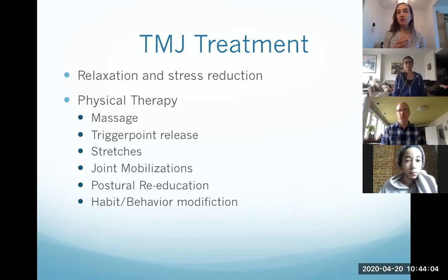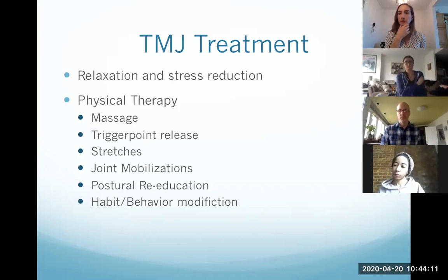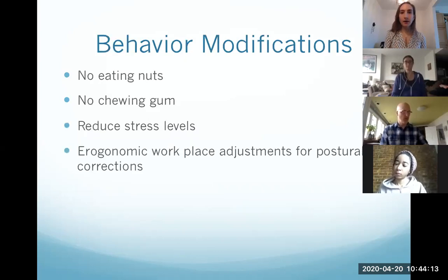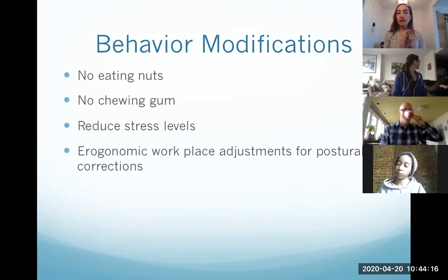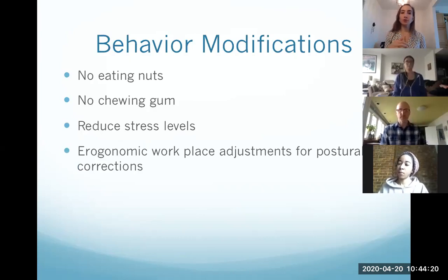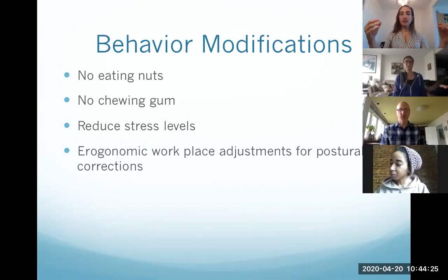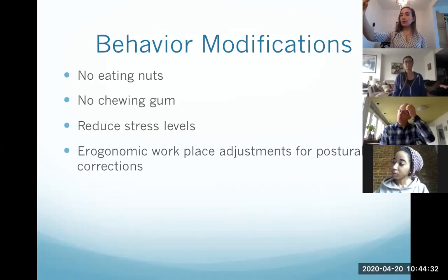Habit and behavior modification: as mentioned, difficulty eating and chewing leads to the recommendation of not eating nuts or other hard foods, no chewing gum, reducing stress, and addressing postural ergonomics — like proper sitting posture and making sure your computer screen is at eye level. All of these adjustments need to be made to allow for healing.